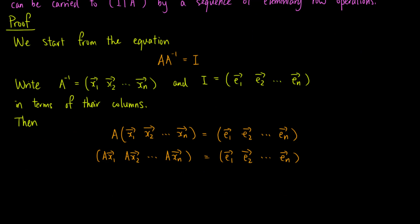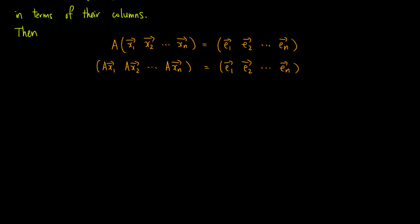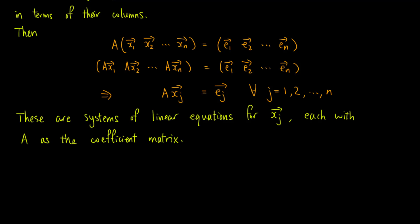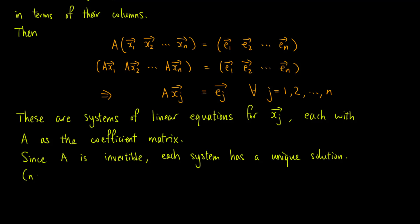This is an equality of two matrices, which means that the corresponding columns must be the same. In other words, A×xⱼ = eⱼ for all j from 1 to n. So we have n systems of linear equations for xⱼ, where A is the coefficient matrix for each system. Since A is invertible, each system has a unique solution given by xⱼ = A⁻¹ × eⱼ.